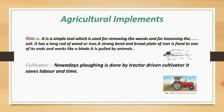Next we have hoe and cultivator. The hoe is a simple tool used for removing the weeds and for loosening the soil. It has a long rod of wood and iron; a strong, bent, broad plate of iron is fixed to one end and works like a blade. It is pulled by animals. In this picture you can see a hoe. Nowadays, plowing is done by a tractor-driven cultivator, which saves labor and time.